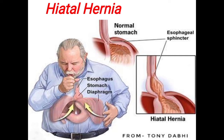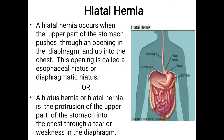So what is hiatal hernia? Here are two definitions. The first definition: hiatal hernia occurs when the upper part of the stomach pushes through an opening in the diaphragm and up into the chest. This opening is called the esophageal hiatus or diaphragmatic hiatus. We can also say hiatal hernia is a protrusion of the upper part of the stomach into the chest through a tear or weakness in the diaphragm.